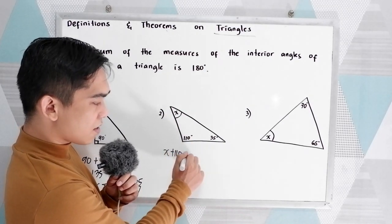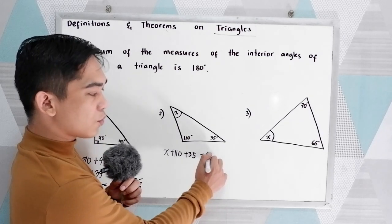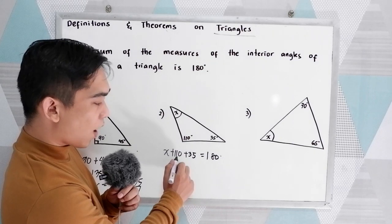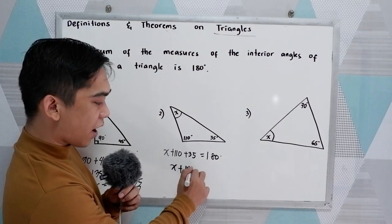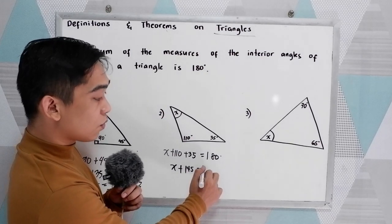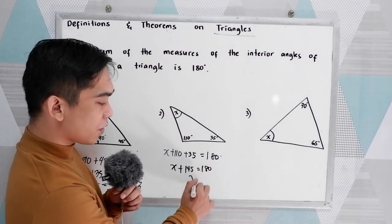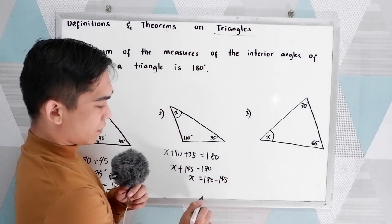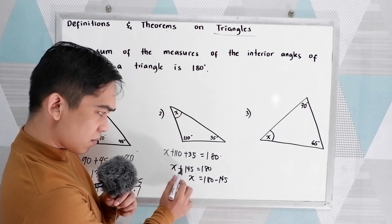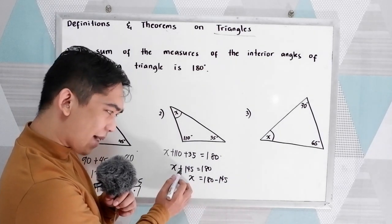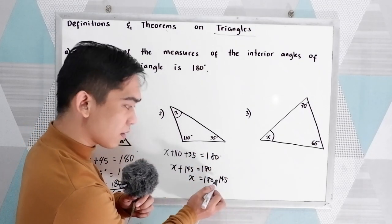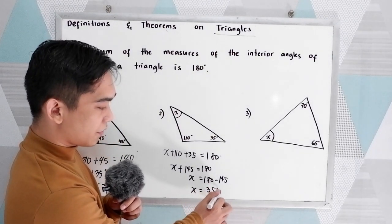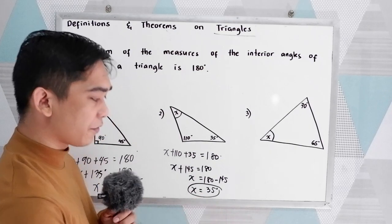x plus 110 plus 35 — their sum is 180 degrees. Now, combine 110 plus 35, that is 145, which is equal to 180. Again, using the addition property of equality, subtract 145 from both sides: 180 minus 145. Or if you want, this is also known as transpose — if you have a positive sign on the left, move it to the right and change the sign. So, x is equal to 35 degrees.